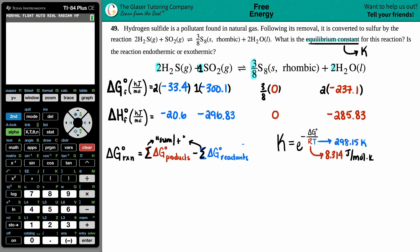I'll do the reactants first on the calculator: 2 times -33.4 plus -300.1. The total for the reactant side is -366.9.